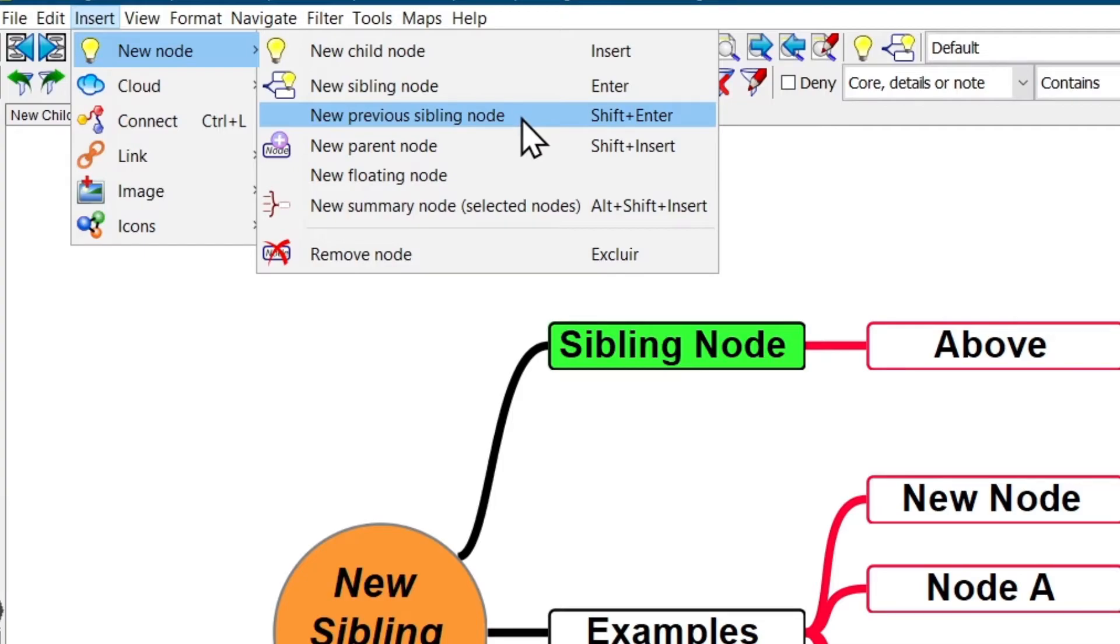You can also see the feature for creating a new previous sibling node, which is the feature to create a new sibling node above the selected node, and the assigned shortcut is also here on the right side, Shift Enter.